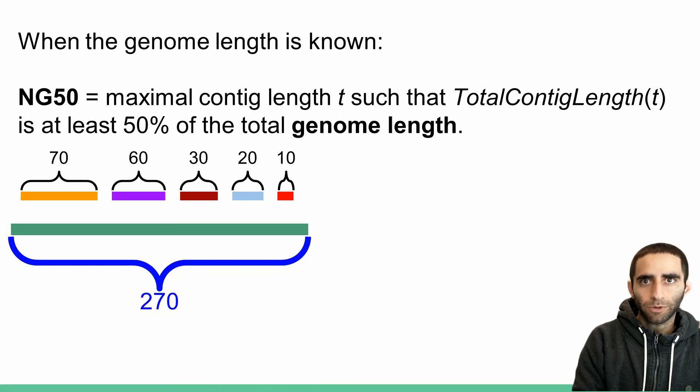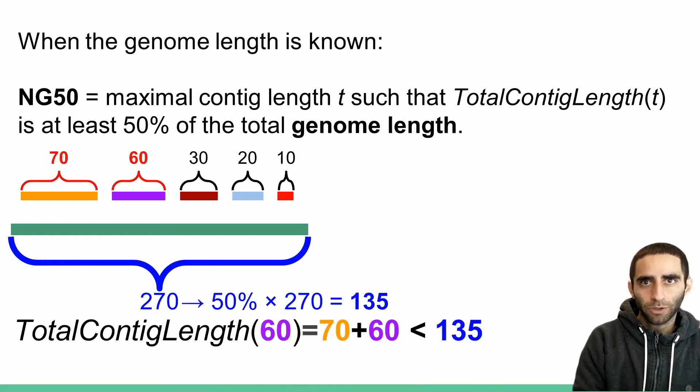Let's work through another example. Here, let's imagine that the true genome length is 270. 50% of this is 135. So the first contig was clearly too short. That was even the case in the N50 example, which was an even smaller length than this one. Let's just jump straight to the second contig length. The second contig is length 60,